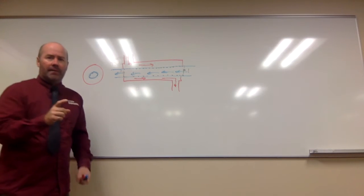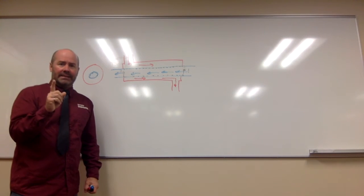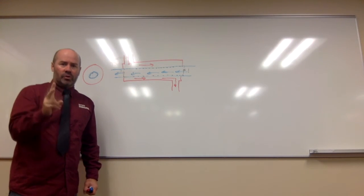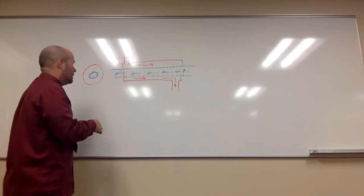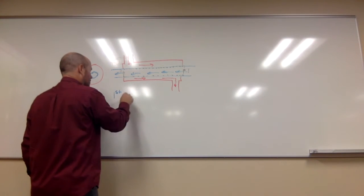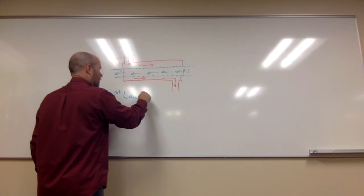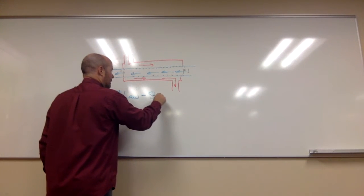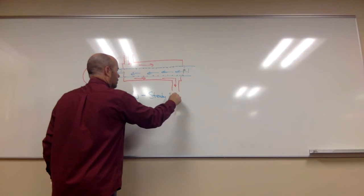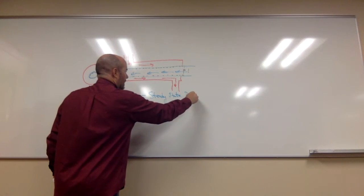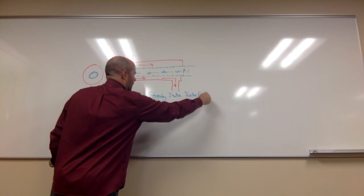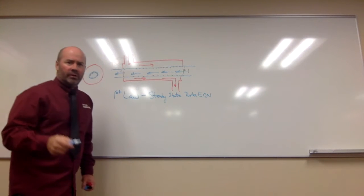I need to give some numbers or names or I need to label these points. Let's just call this point one and this point two. So the water when it's coming in is at point one and when it's leaving, it's at point two. All right. So I'm going to write the first law. I'm going to do it in steady state. And I'm going to do it with the rate equation. So I'm going to do the first law steady state. I'm going to do the rate equation.